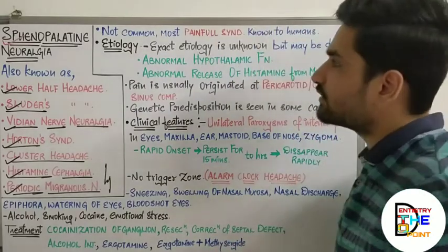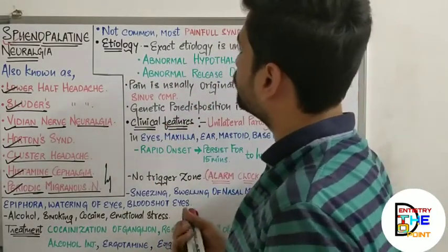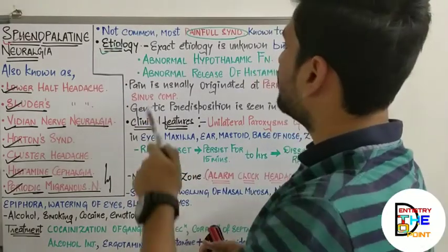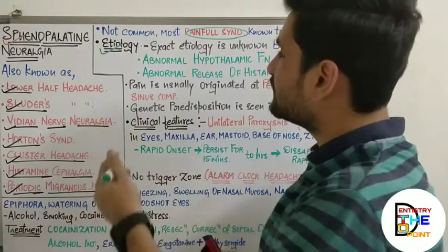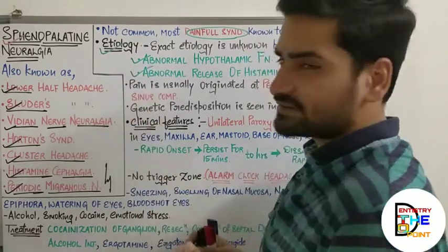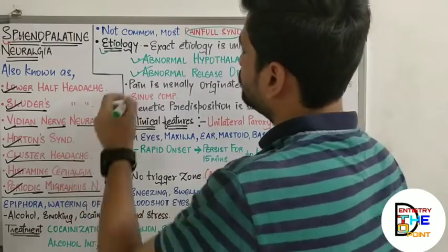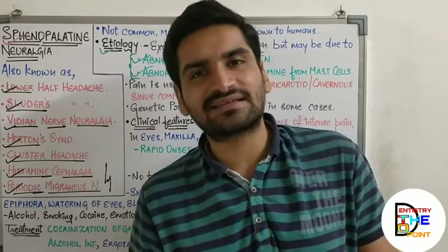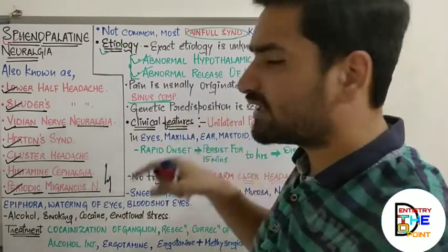Sphenopalatine neuralgia is not common but is the most painful syndrome known to humans. The exact etiology or pathophysiology is still not properly known, but it may be due to abnormal hypothalamic function or abnormal release of histamine from mast cells — histamine being an inflammatory mediator. Pain is usually originated at the pericarotid or cavernous sinus component. In some cases, there is a genetic predisposition to this condition.